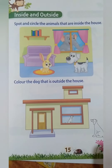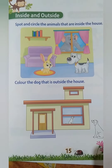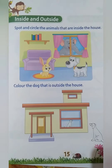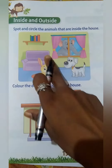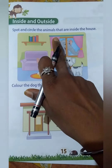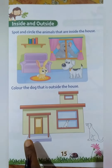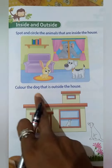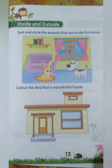Children, here is the inside and outside practice page. This is in your Namaste workbook. First picture — you have to spot and circle the animals that are inside the house. Next picture, color the dog that is outside the house.